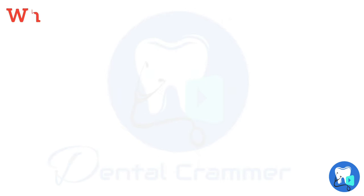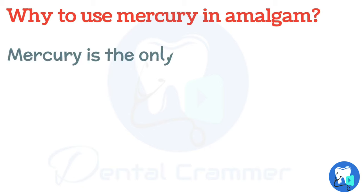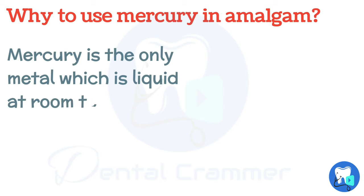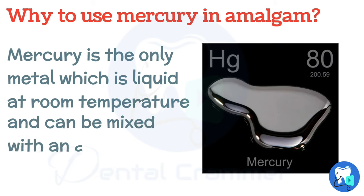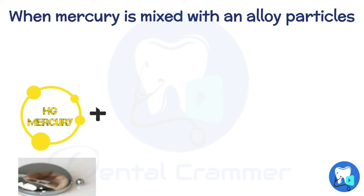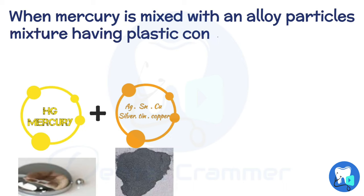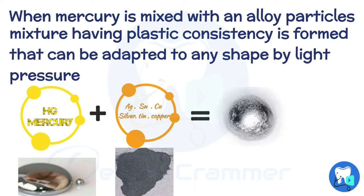In spite of many controversies regarding the use of mercury, the question arises: why use mercury in dental amalgam? Mercury is the only metal which is liquid at room temperature and it can be mixed with an alloy. When mercury is mixed with metal, mercury diffuses into metal particles and crystals begin to precipitate out.